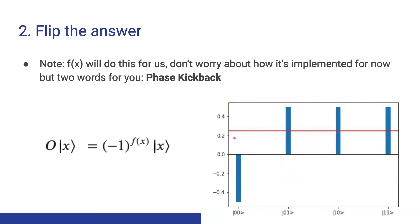If you don't know how the oracle does this — this is why I mentioned phase kickback so many times. In Grover's algorithm, we use phase kickback to apply a negative phase to the target answer. This notation should look familiar from the Deutsch-Jozsa example. We flip the answer, and you notice the mean has changed.